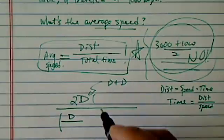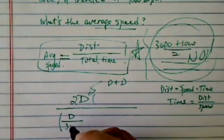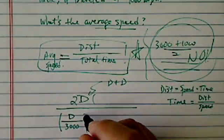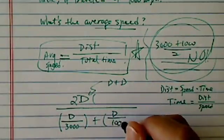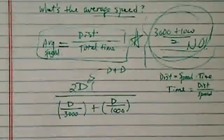Distance there is distance divided by 3,000 miles per hour and distance on the back is 1,000 miles per hour.